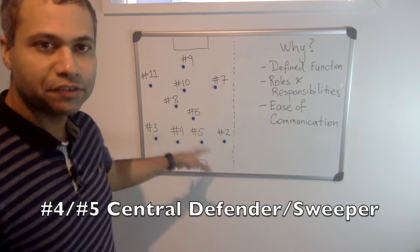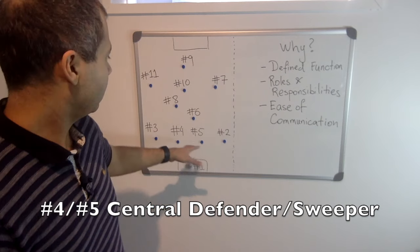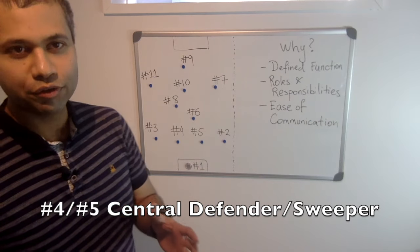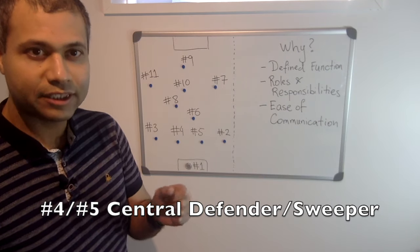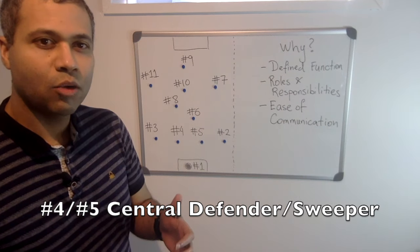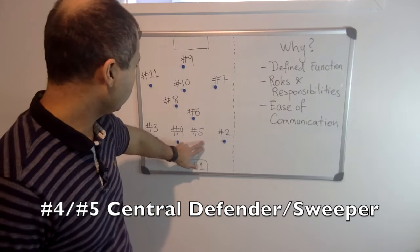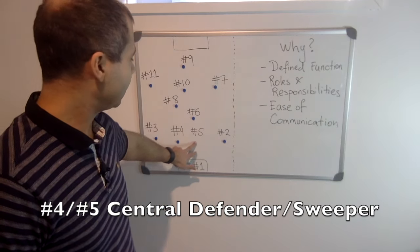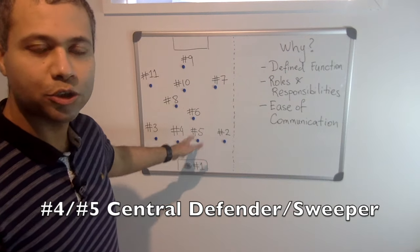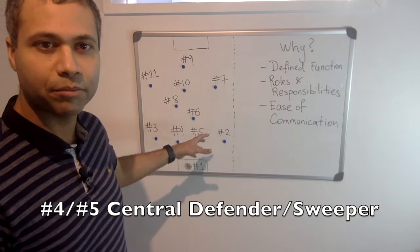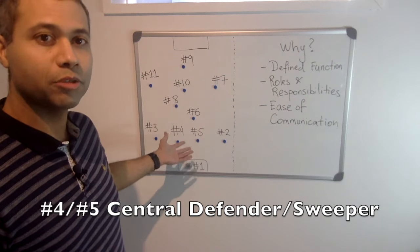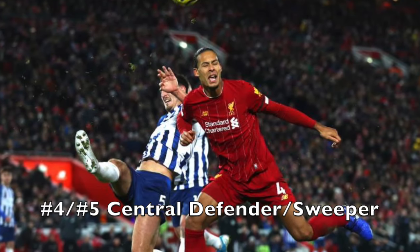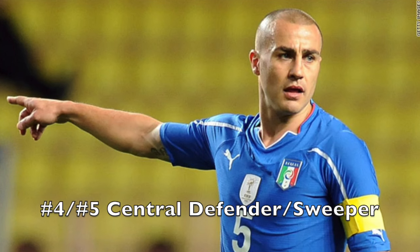The next positions are the central defensive positions — the number four and the number five. Coaches usually refer to the number four as the real central defensive position, whereas the number five is more of a sweeper role. Sweepers aren't used that often these days, but you can refer to your central defensive partnership as both number fours, or as the number four and number five. Good examples are Virgil van Dijk of Liverpool and Cannavaro of Real Madrid.